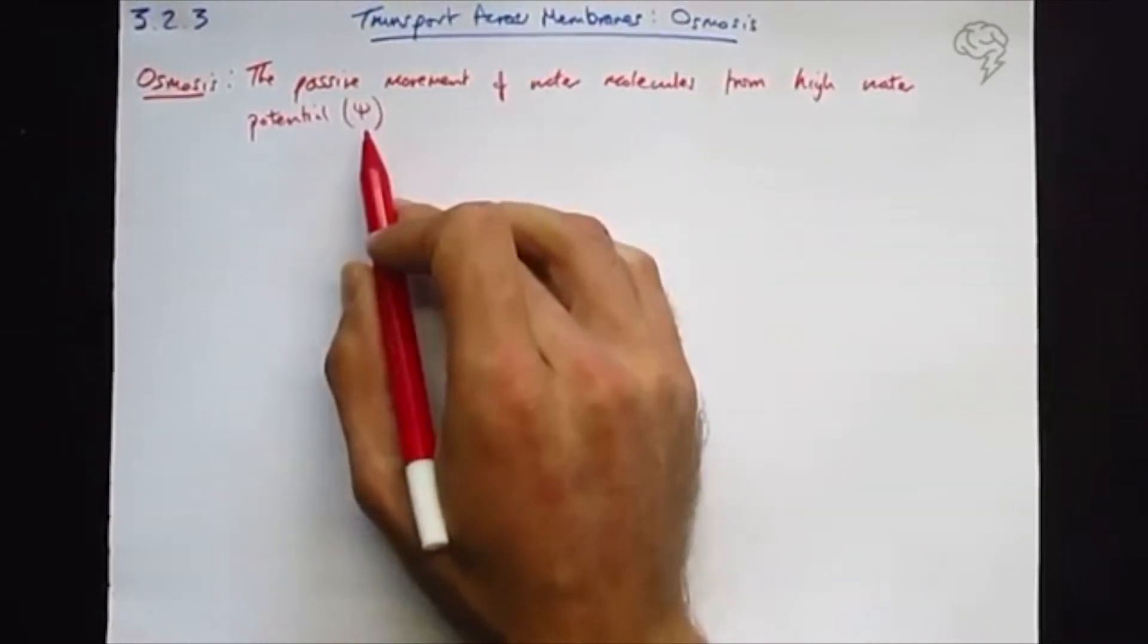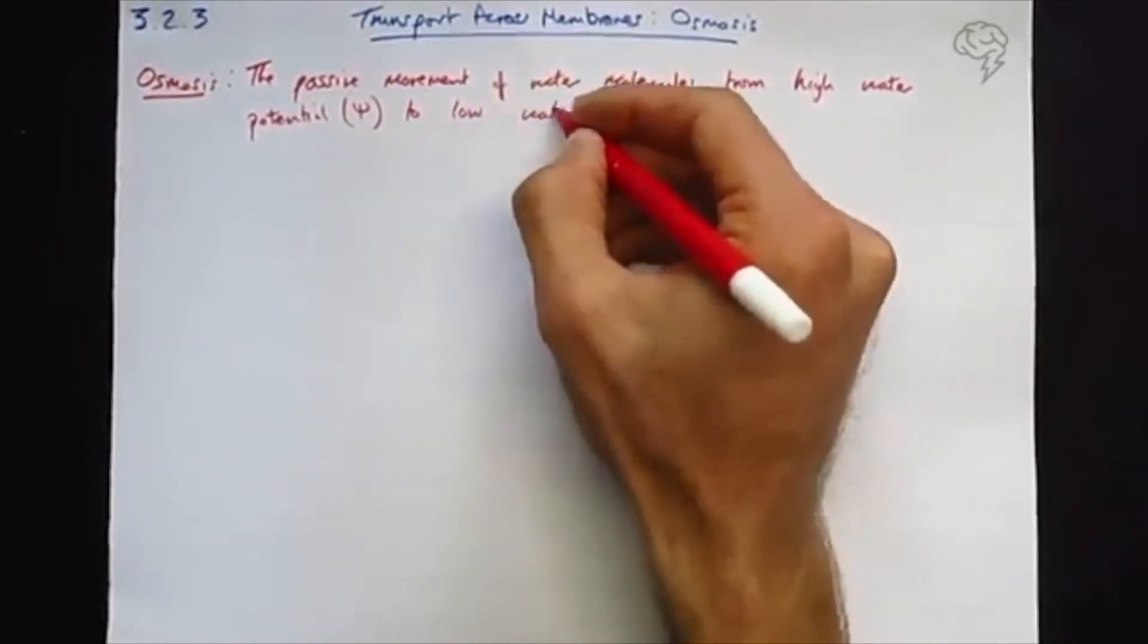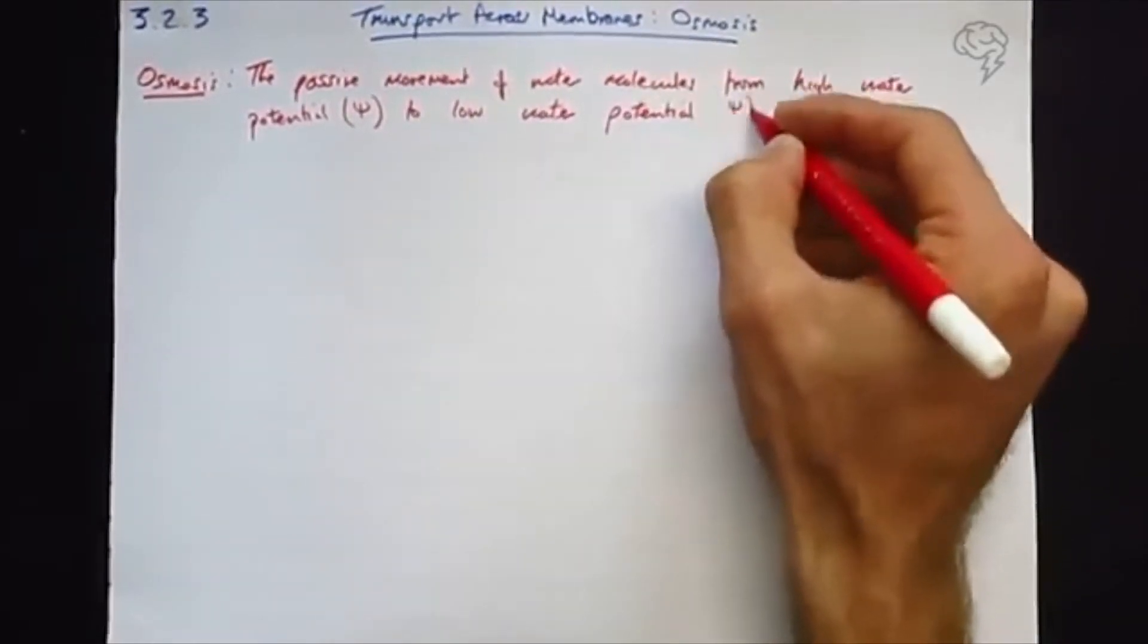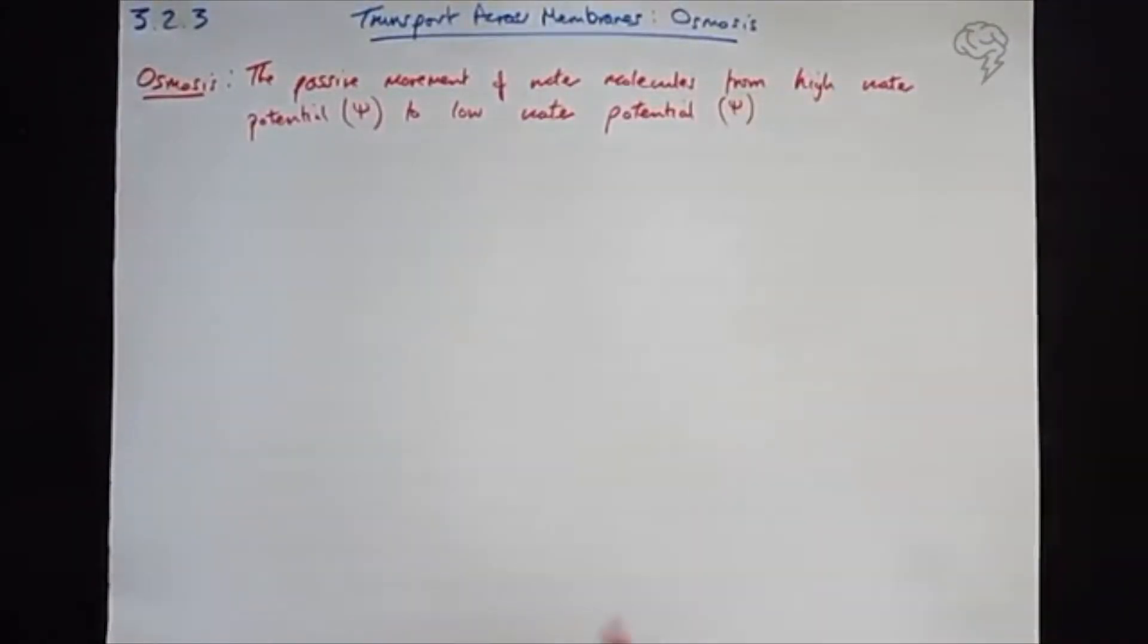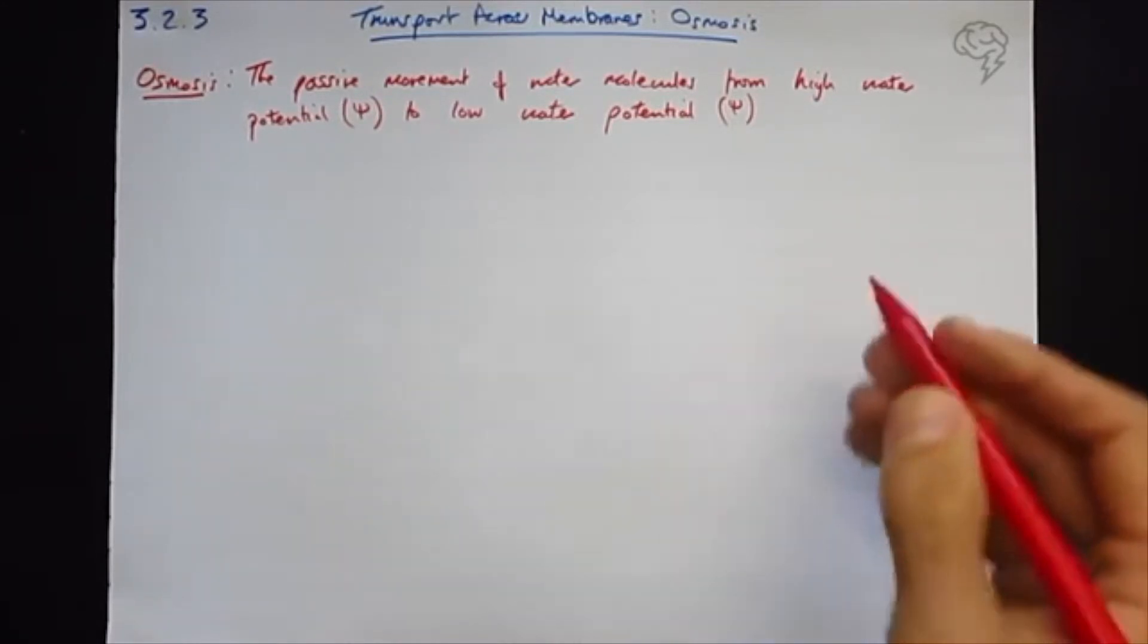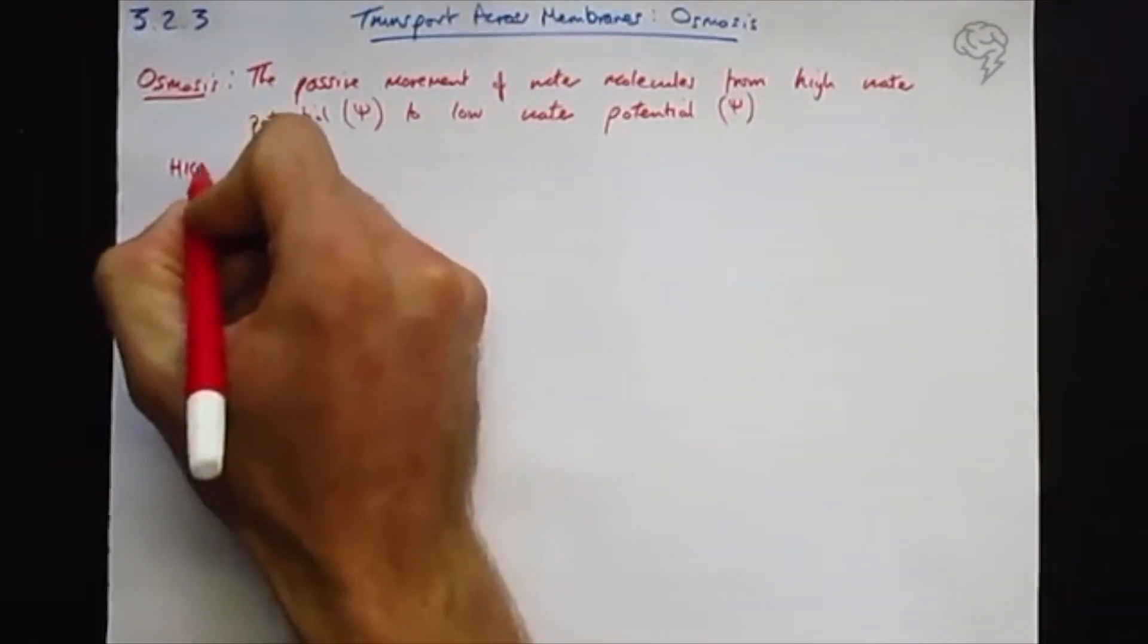So this is the sign for water potential. High water potential - I'm just going to use it so we get familiar with it. Understanding what high water potential means and what low water potential means is the key. Going from high to low is just like diffusion, but what students get confused with all the time is that it's the water potential from high to low, and I'm going to try and explain to you as clearly as possible what that is.